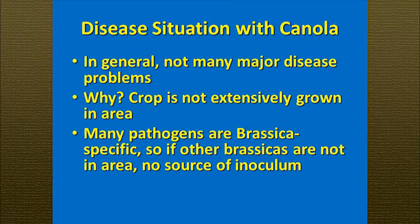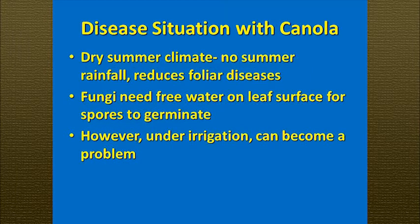In general, you really don't have a lot of disease problems in the Pacific Northwest. One of the main reasons for this is that canola is not extensively grown in this region, although we would like to see more of it grown here. Right now there just isn't a lot grown, so the pests are pretty low. A lot of pathogens that impact the brassicas are specific to brassicas — they aren't going to go to wheat or potatoes or other crops we grow. So we don't have a source of inoculum in the area. In addition, we have generally a dry summer climate, so there's very little summer rainfall, and this reduces foliar diseases.